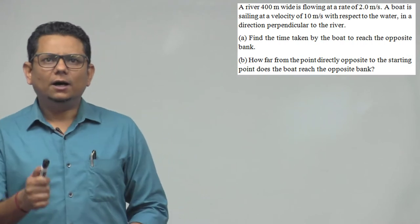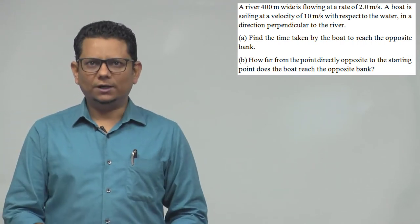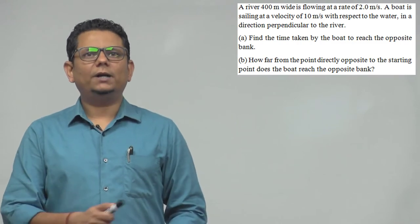Next question: A river 400 meters wide is flowing at a rate of 2 meters per second. A boat is sailing at a velocity of 10 meters per second with respect to the water in a direction perpendicular to the river.